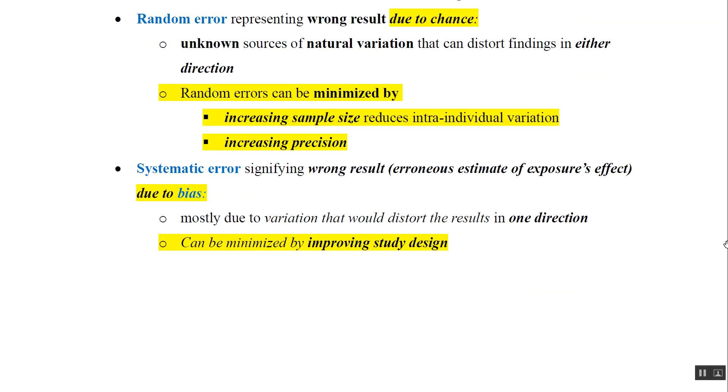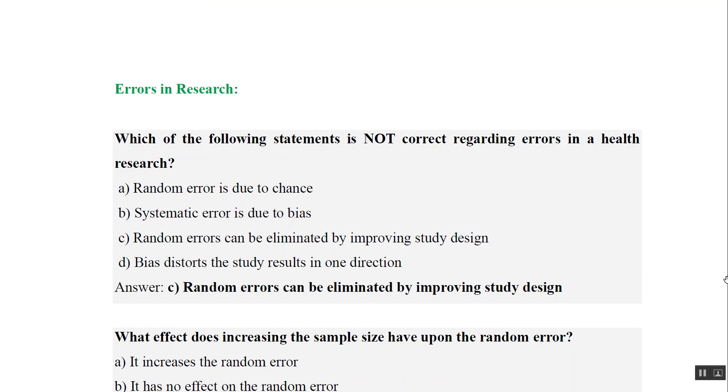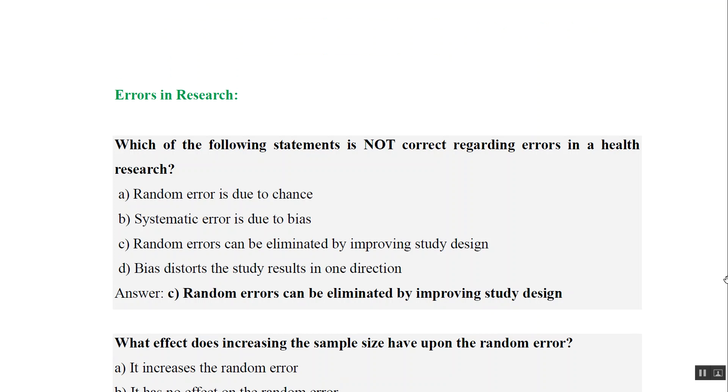Question: Which statement is NOT correct regarding errors in health research? Random error is due to chance—correct. Systematic error is due to bias—correct. Random errors can be eliminated by improving study design—no, systematic errors are eliminated by improving study design. Bias distorts results in one direction—yes.